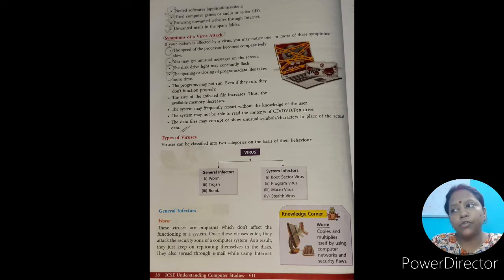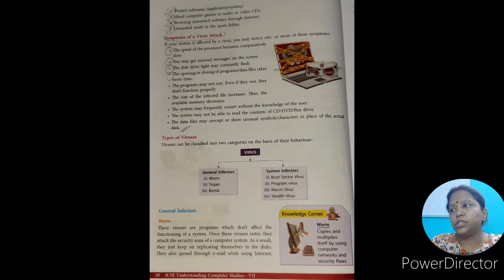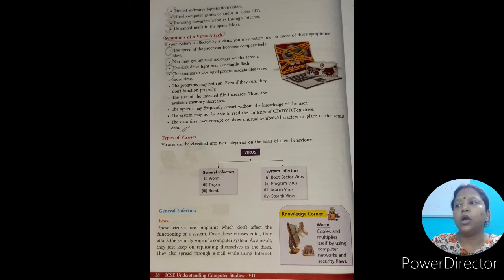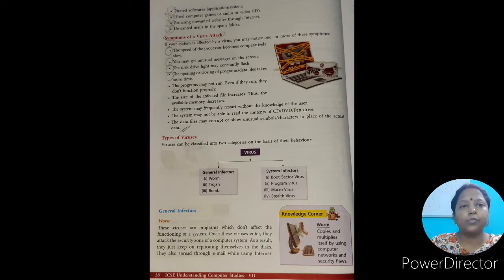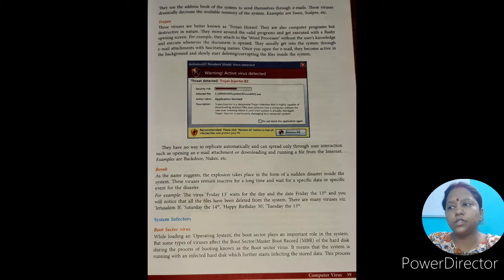Now we will discuss general infector virus in detail. First, worm. These viruses are programs which don't affect the functioning of the system. Once these viruses enter, they attack the security zone of the computer system. As a result, they just keep on replicating themselves in the disk. They also spread through email while using the internet. They use the address book of the system to send themselves through emails. These viruses drastically decrease the available memory of the system. Examples are Sven, Scalper, etc.